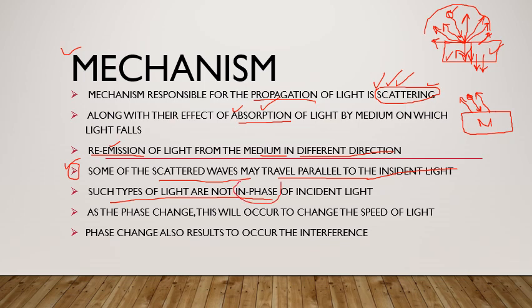Such types of light are not in phase with the incident light — یعنی ہم صرف ان scattered waves کی بات کر رہے ہیں جو incident light کے parallel ہیں، وہ کبھی in phase نہیں ہو سکتیں۔ اگر face/phase change ہو گیا ہے تو وہاں پر کچھ نہ کچھ phase میں changing آئی ہے، اور جب بھی phase change ہوگا تو speed of light میں بھی change آئے گی۔